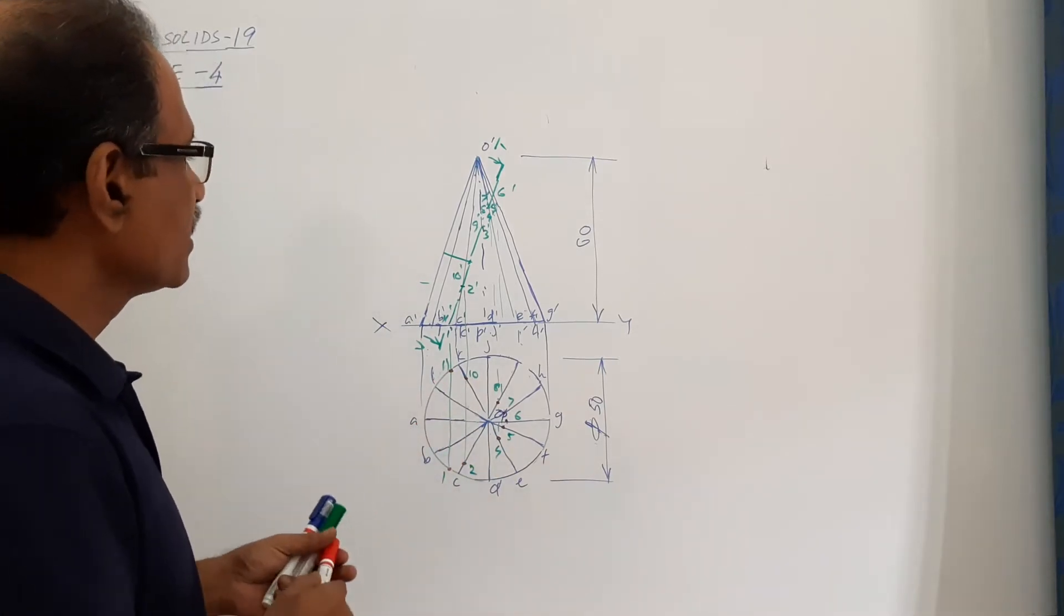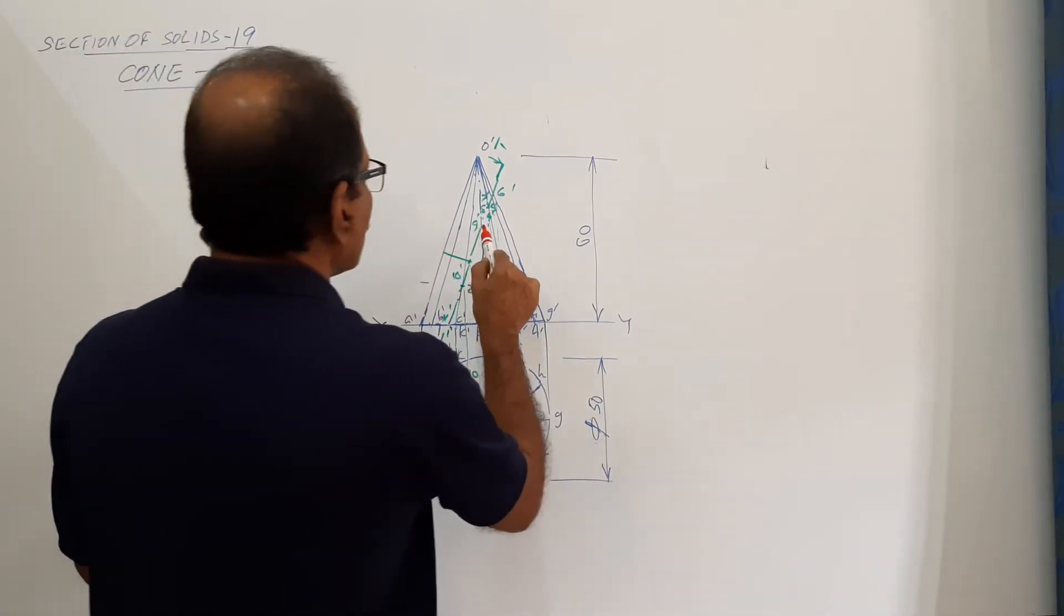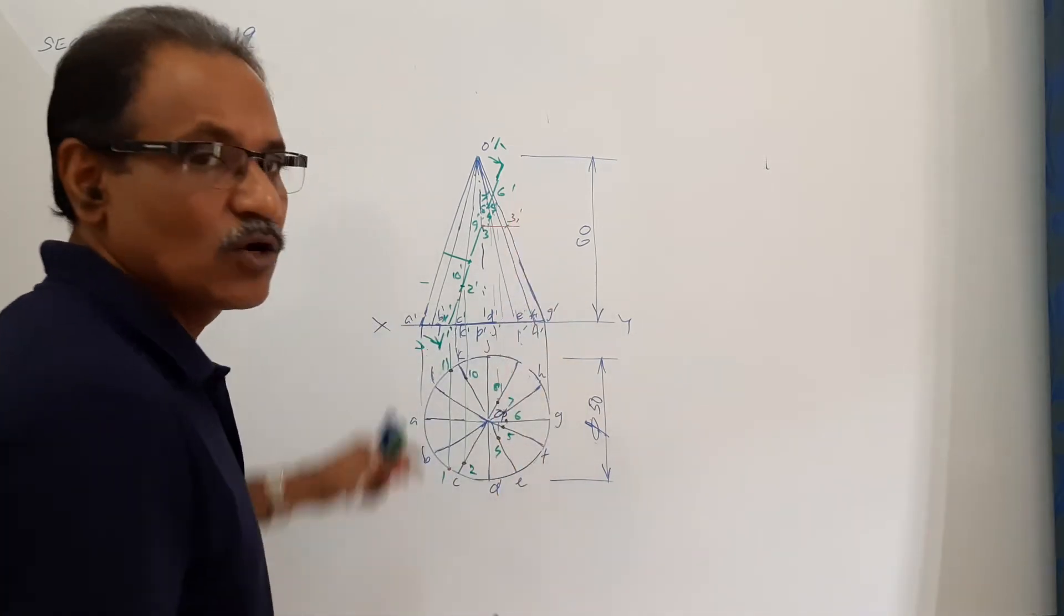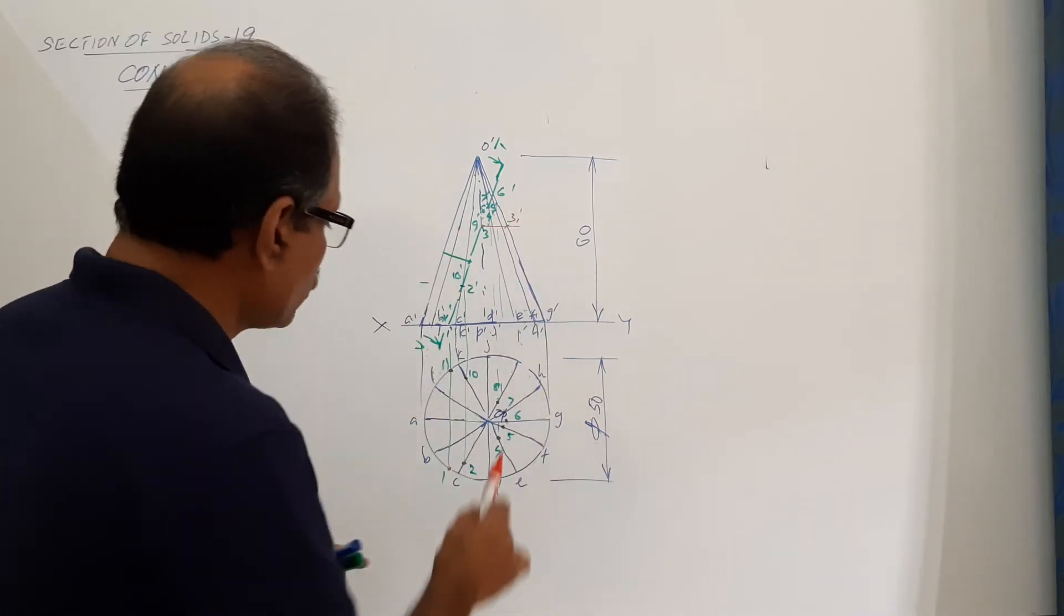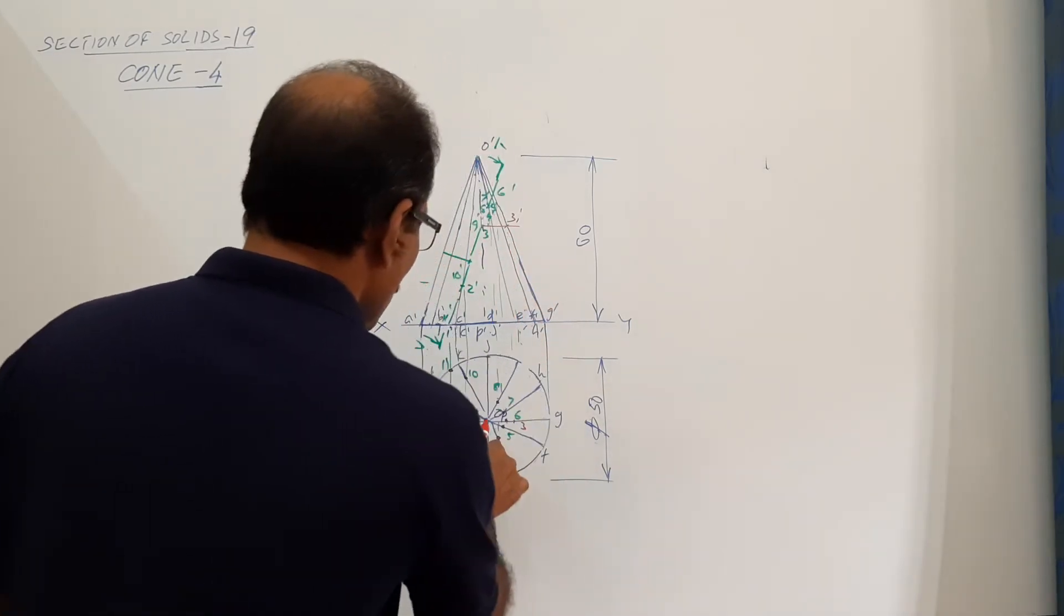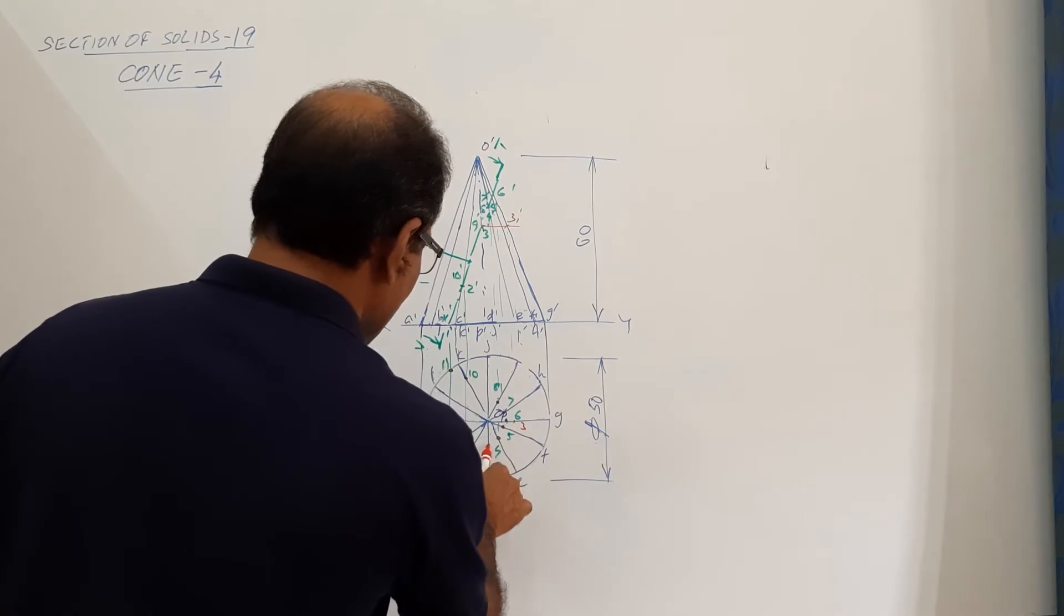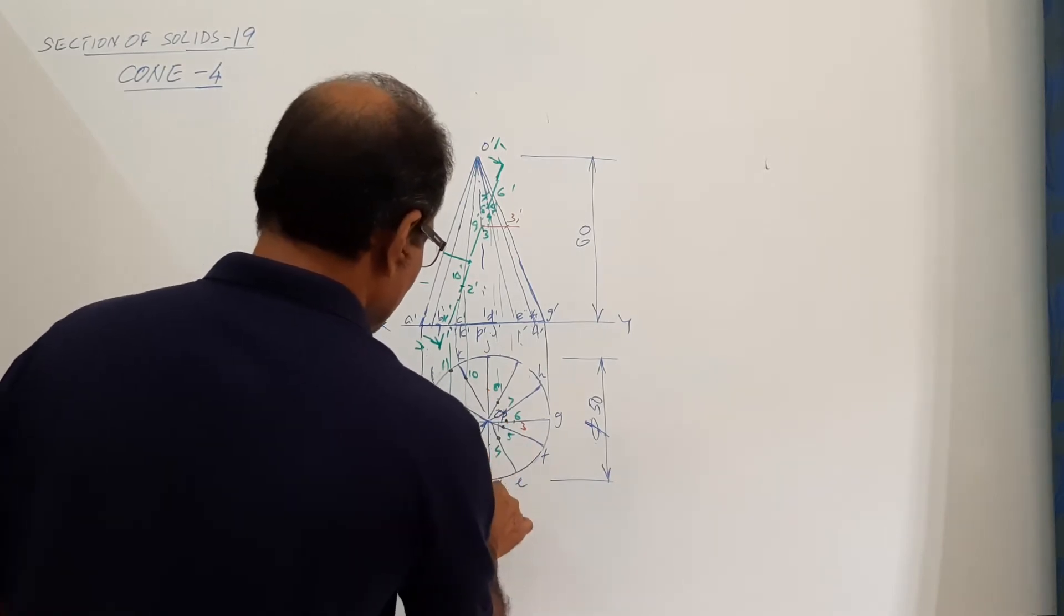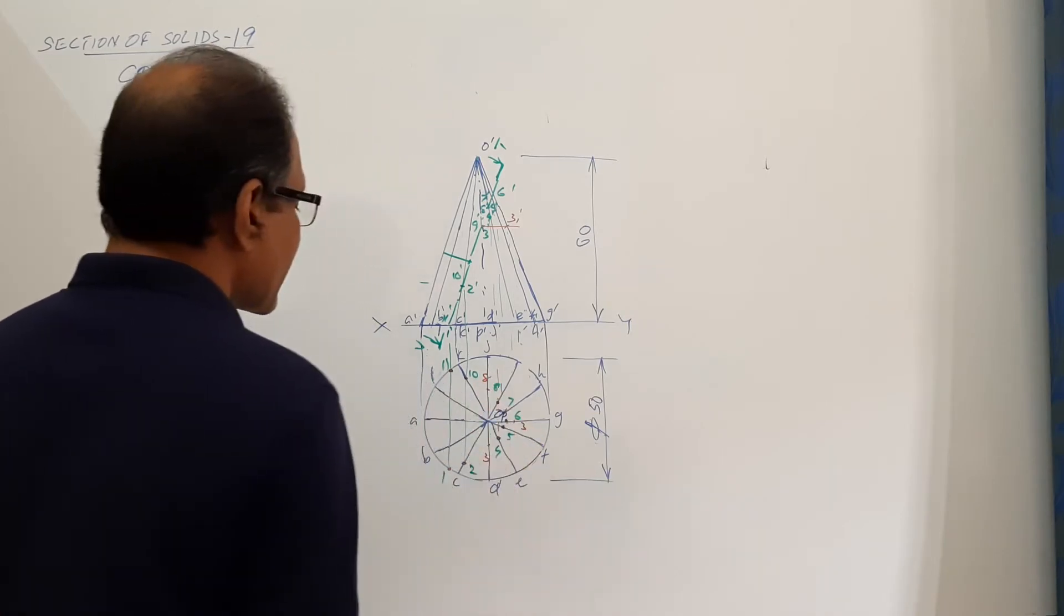What is the meaning? Three and nine, draw horizontal line. Three one dash, where on O dash G dash, drop it down to OG. You get three. O is center, O three as radius, draw arc. You get three A, you get H. Connect them.